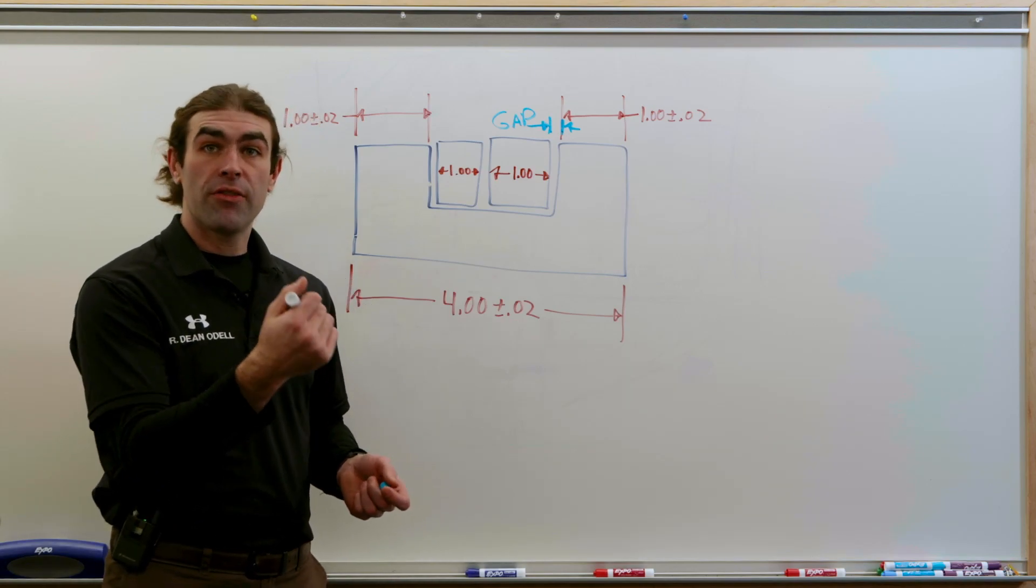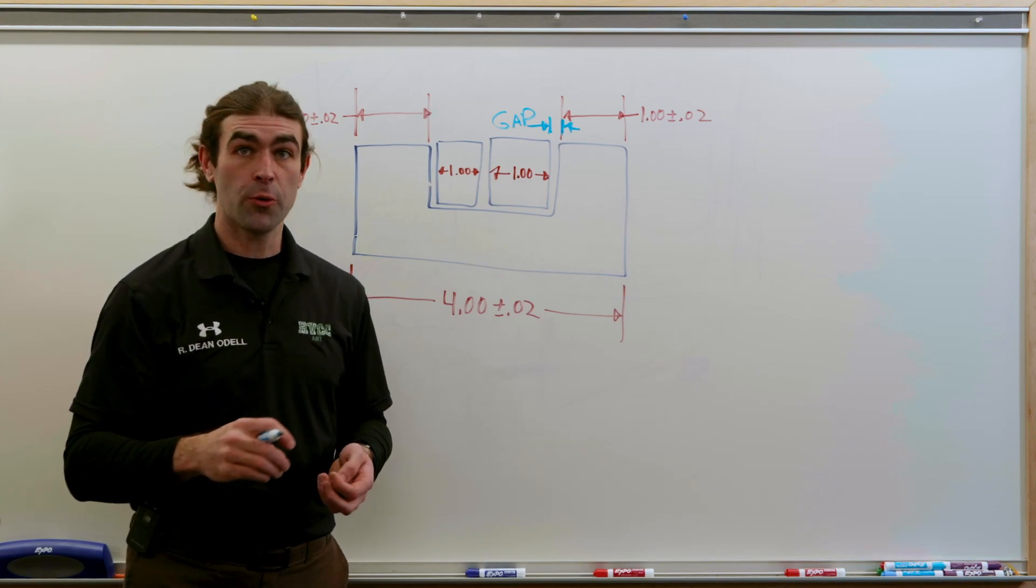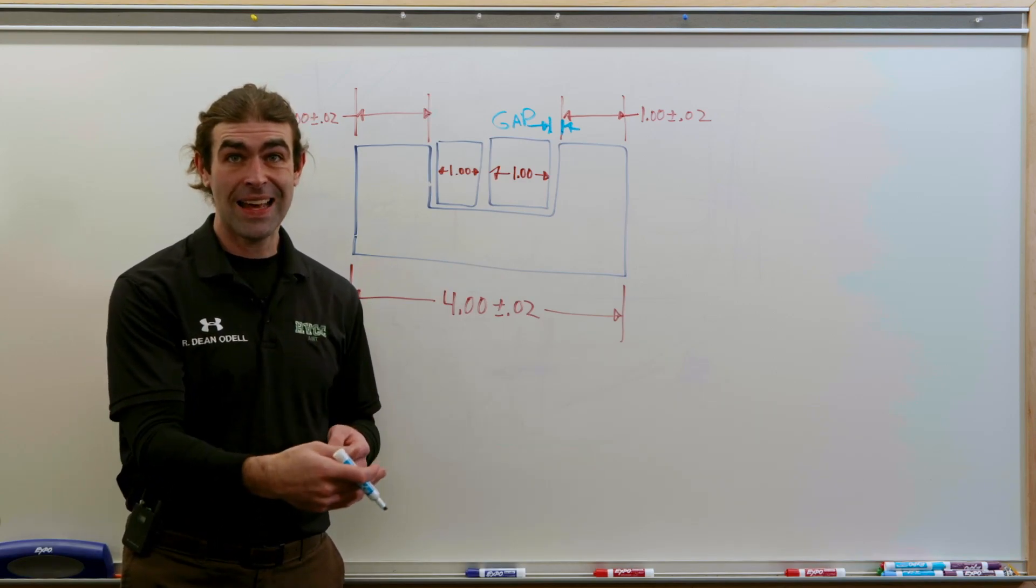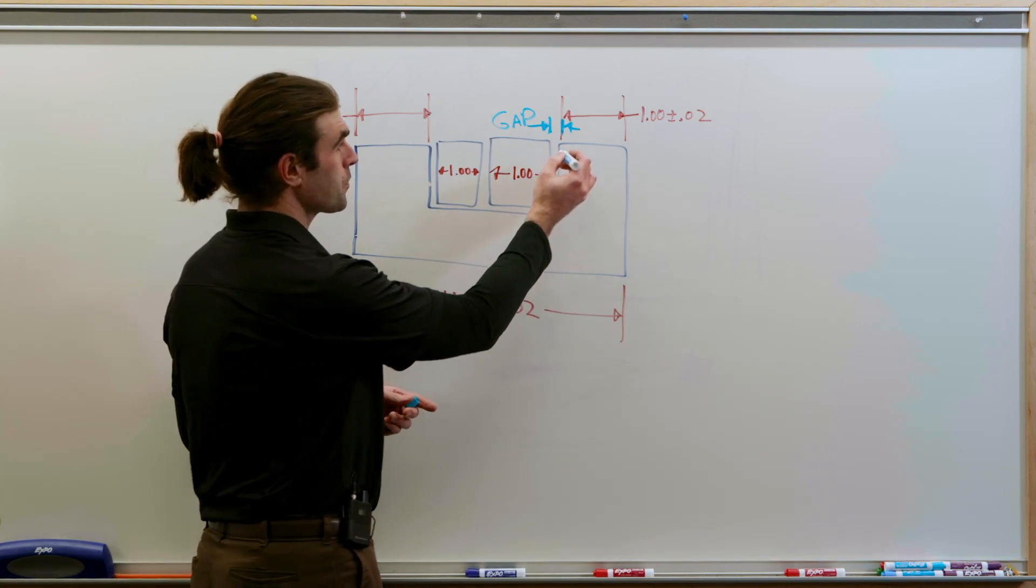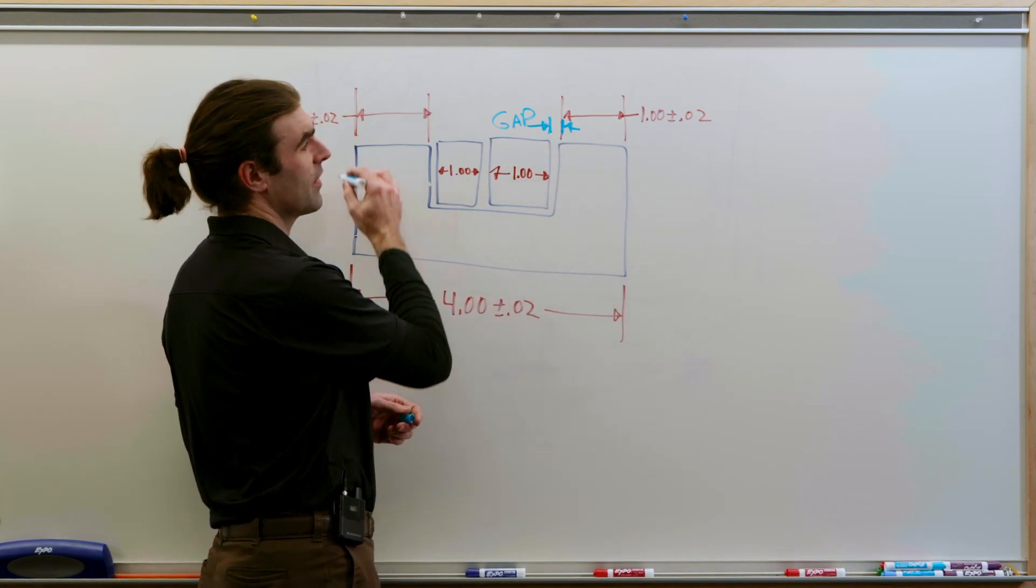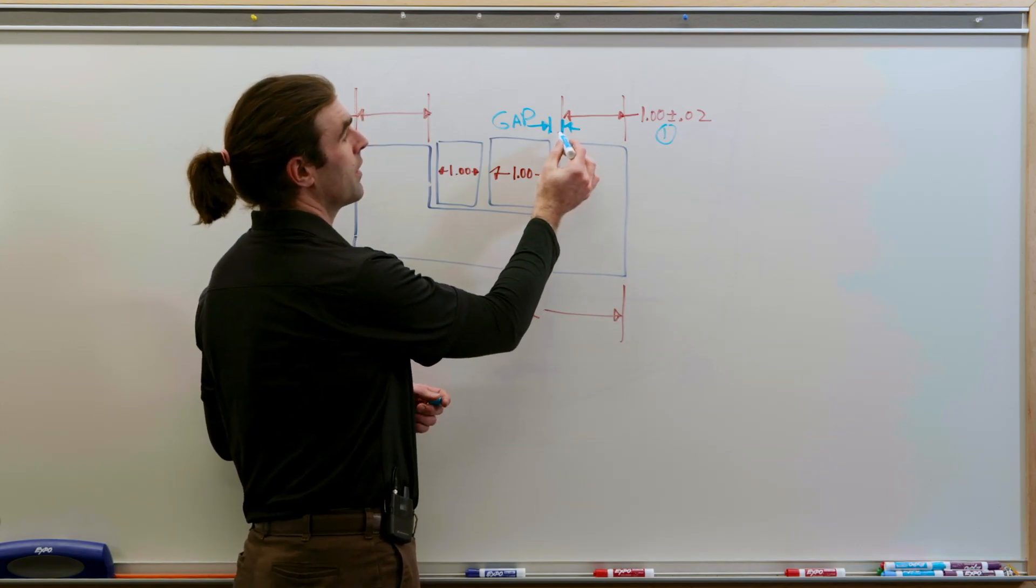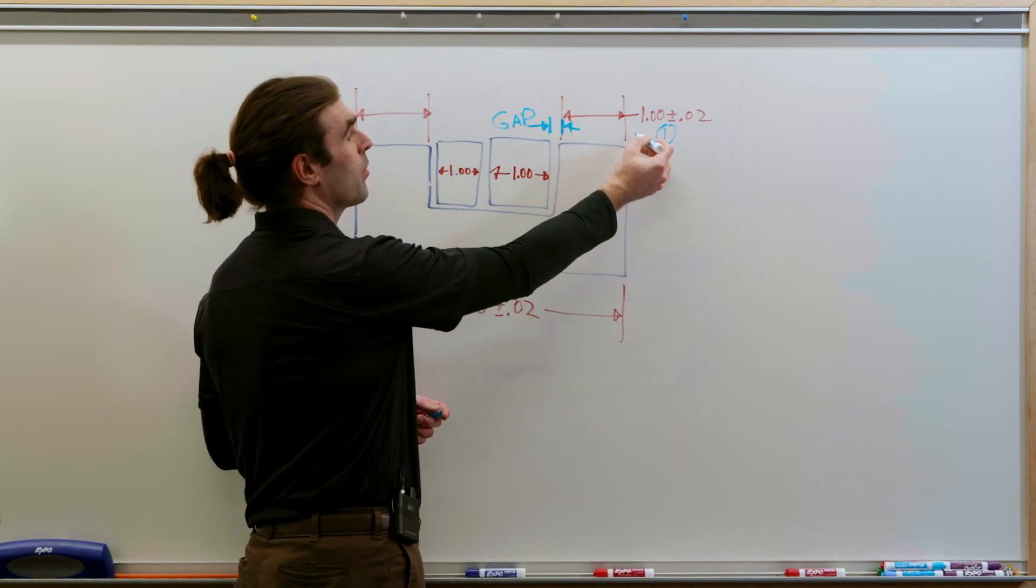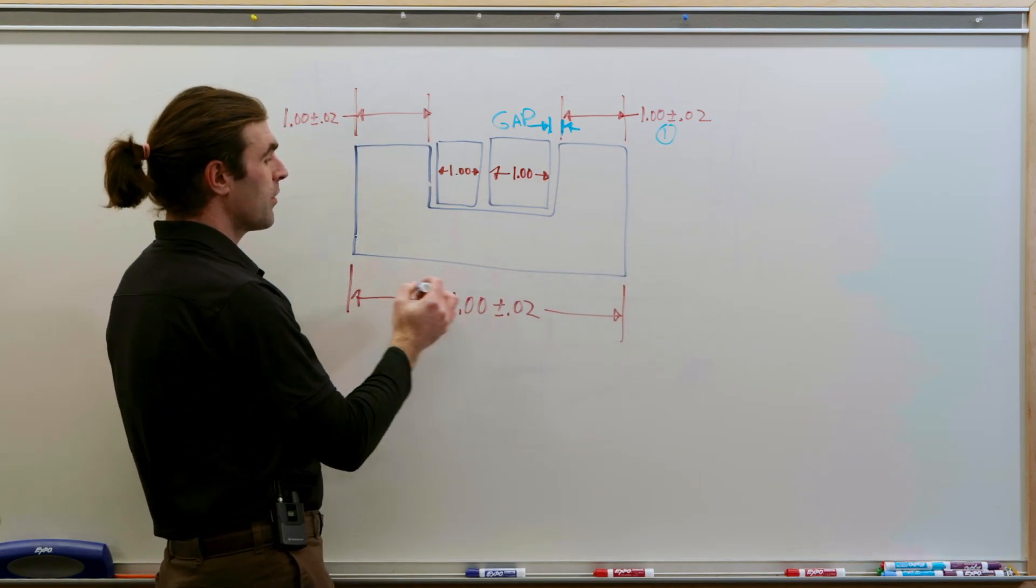Now we're going to create a vector loop to see where the tolerances lead us. So in a vector loop, the dimensions must connect and we must add the tolerances. So let me show you. We'll go from right to left. So this dimension is number one. So from this side of the gap, we go to this dimension. Now the only place we can go is back this way.